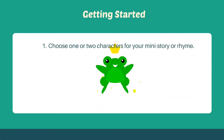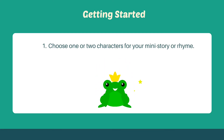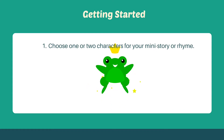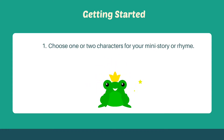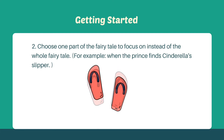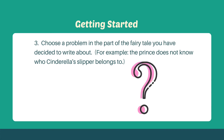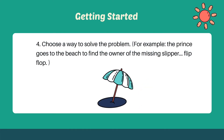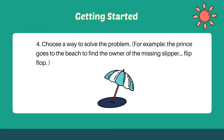After you've chosen which fairy tale to fracture, you will want to do the following. One: choose one or two characters for your mini story or rhyme — you can't have too many characters in six lines, so it's important to focus on just one or two. Two: choose one part of the original fairy tale to focus on instead of the whole fairy tale — for example, when the prince finds Cinderella's slipper or flip-flop. Three: choose a problem in the part of the fairy tale you've chosen — for example, the prince does not know who Cinderella's slipper or flip-flop belongs to. The problem can be the same as in the original fairy tale. Four, and last: choose a way to solve the problem — for example, the prince goes to the beach to find the owner of the missing slipper or flip-flop.